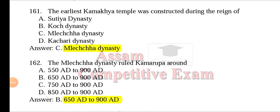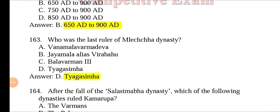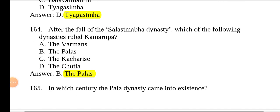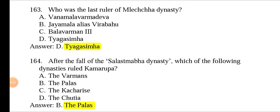Question 161: The earliest Kamakhya temple was constructed during the reign of the Leccha dynasty. The Leccha dynasty ruled Kamarupa around 650 AD to 900 AD. The last ruler of the Leccha dynasty was Tyaga Simha. After the fall of the Leccha dynasty, the founder of the next dynasty was Shalas Sambha. After the fall of the Shalas Sambha dynasty, the Palas ruled Kamarupa.